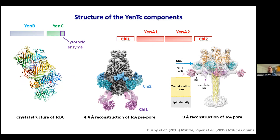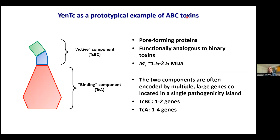Summarizing the functional insights from these structures: the NtC is a prototypical example of a subfamily of ABC toxins, which we now think of as functionally analogous to the larger family of bacterial pore-forming toxins known as binary toxins. Borrowing from binary toxin terminology, these are comprised of two separable components — an active component and a binding component — often referred to as AB toxins. In the ABC toxin context that terminology can be confusing since A and B are reversed compared to TCA and TCB, so I'll refer to them as the active component and binding component.